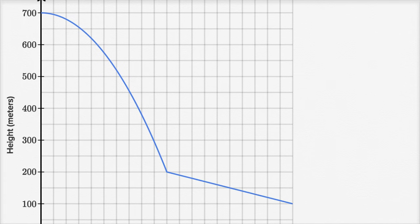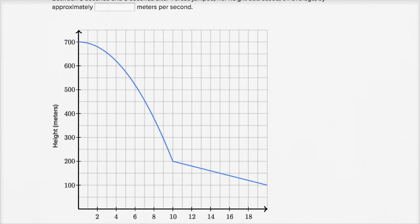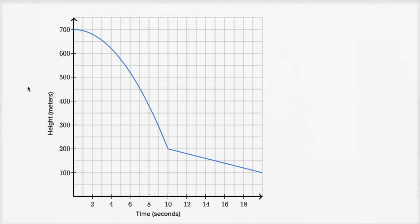It's actually quite large, so let me zoom out a little bit. We can see that at time zero her height is 700 meters. And then as time increases, as we move to the right, her height is decreasing — and decreasing at faster and faster rates. The rate of decline is quite steep as we approach 10 seconds after she jumps.